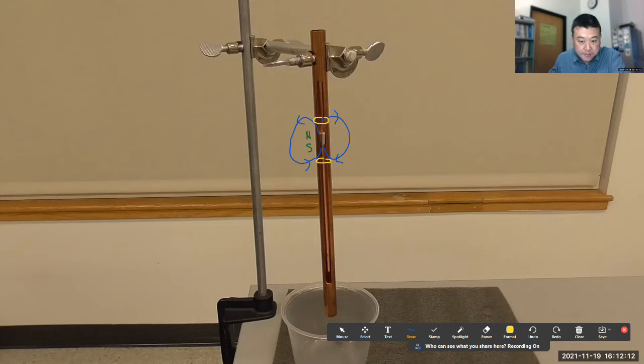So if you imagine loops like this, then as this magnet falls down, the magnetic flux through this loop is changing.